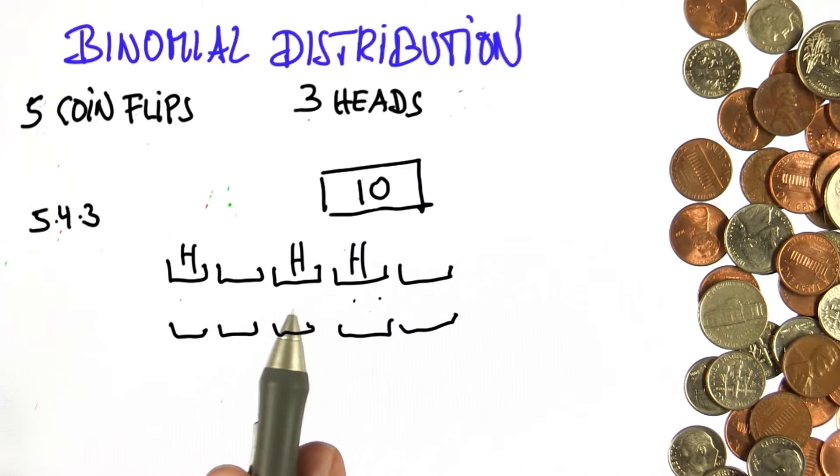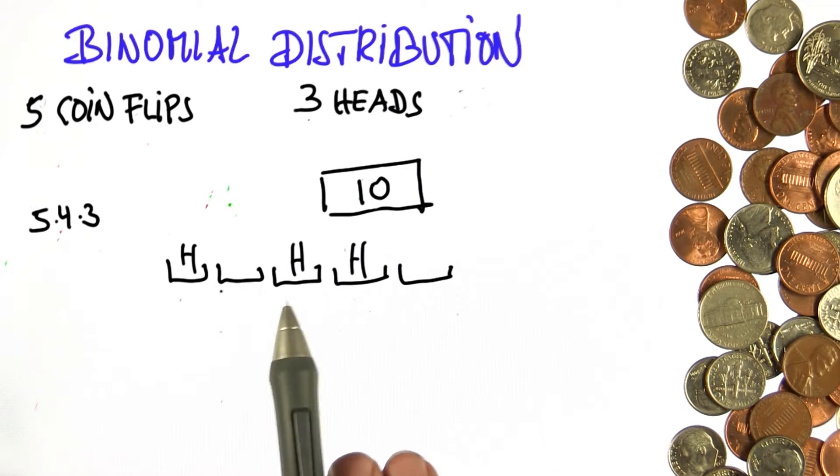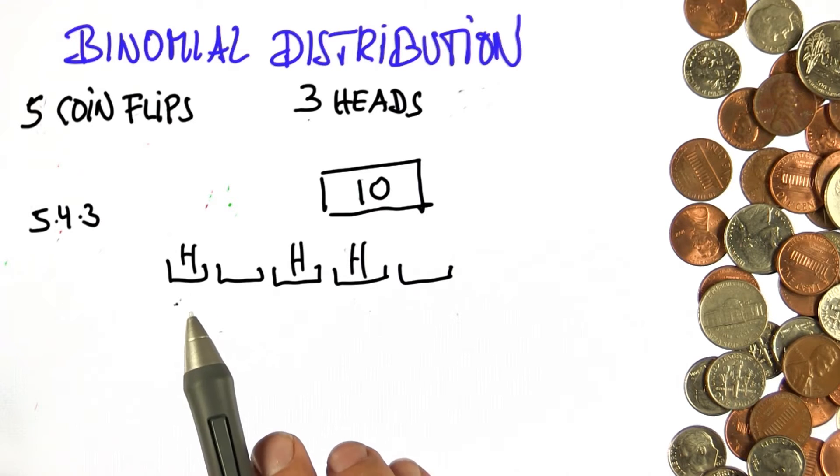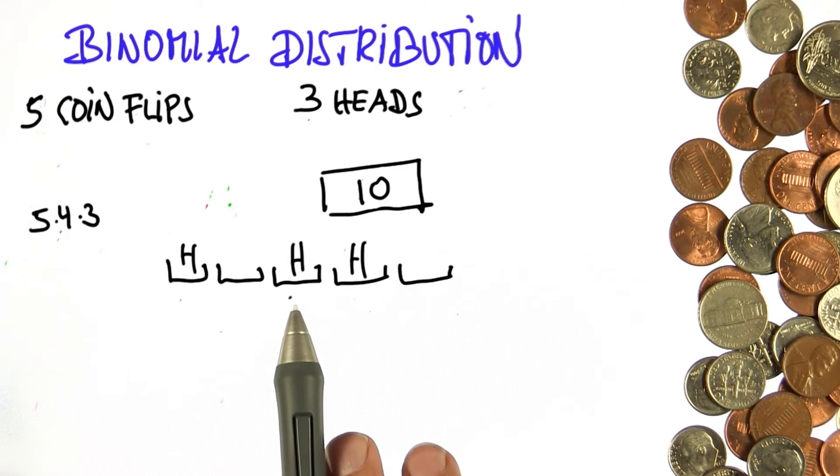But now I'm over-counting. How much am I over-counting? Well, suppose I'm committed to put the three heads into these three slots over here. And that's now a given. And now I just wonder in what order I've put them in.